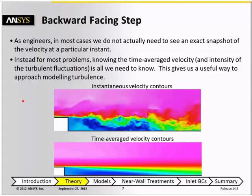What this means is that if we were to take a snapshot of an instantaneous turbulent flow field, for instance as we see in the upper image here, then you can clearly see the effects of these random fluctuations.